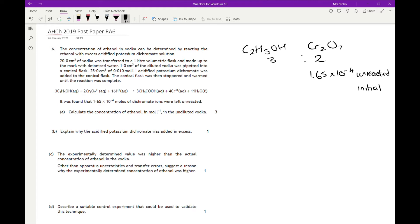So you started with n equals CV. Our concentration and volume of the acidified potassium dichromate is over here, so 0.01 times 0.025, which equals 0.00025, or if your calculator's done it, that would be 2.5×10⁻⁴.